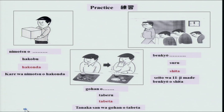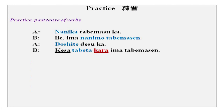There is a small conversation. Nanika tabemasu ka? — Will you have something? Iie, ima nani mo tabemasen. Whenever there is nani mo, the verb that follows is always in the negative. Doshite desu ka? — Why? Kesa tabeta kara ima tabemasen — I had it this morning, so I will not eat now. Kesa is 'this morning.' Doshite is 'why.' This is how you use plain past form before kara to give a reason.